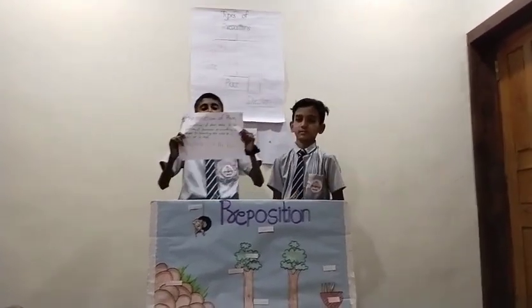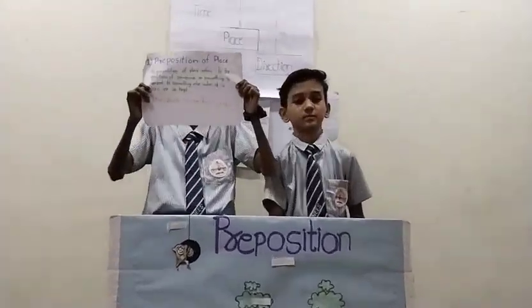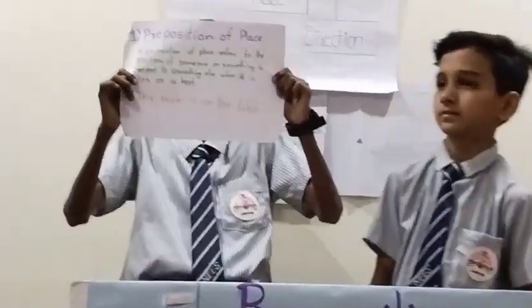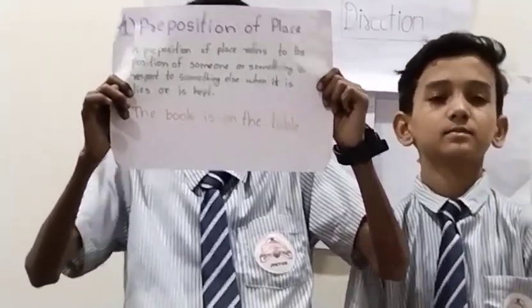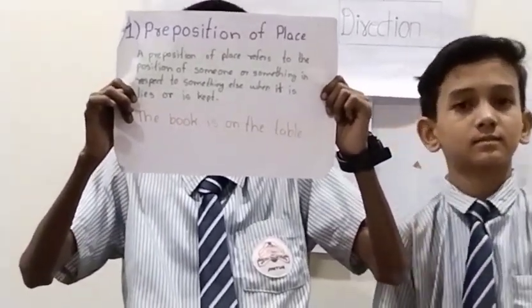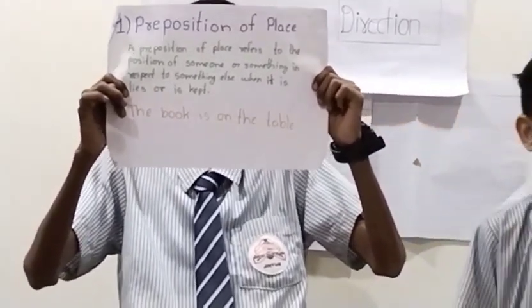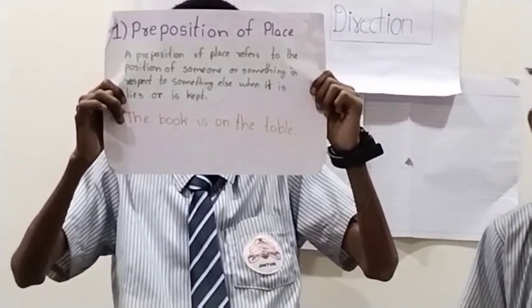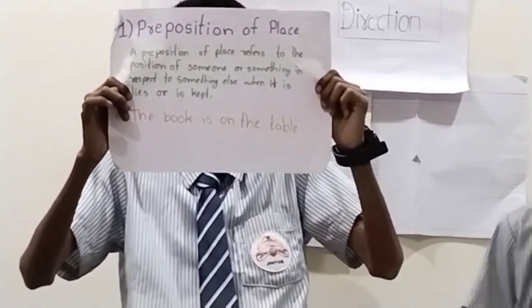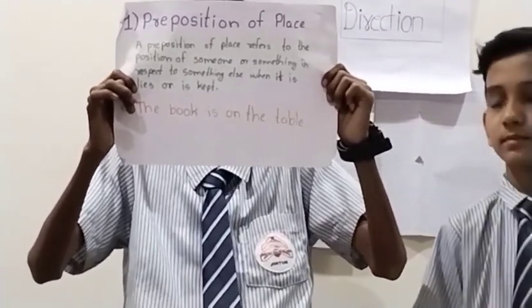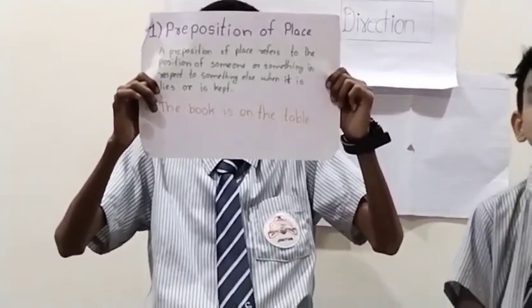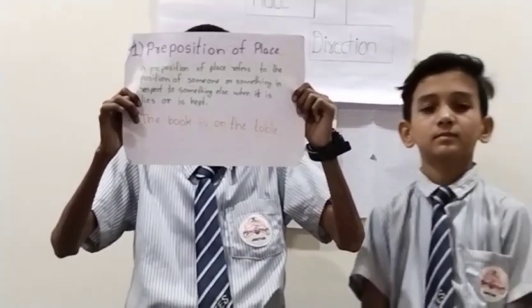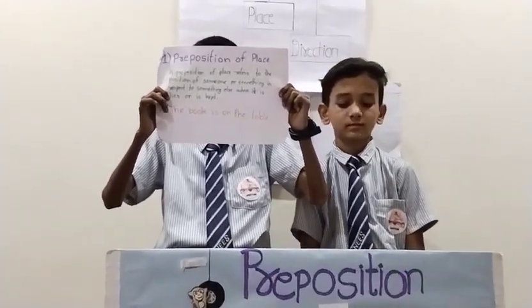First, preposition of place. Preposition of place refers to the position of something with respect to something else — where it lies or is kept. For example, the book is on the table. Here, 'on' is the preposition of place.